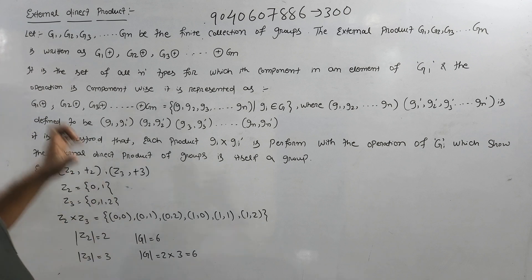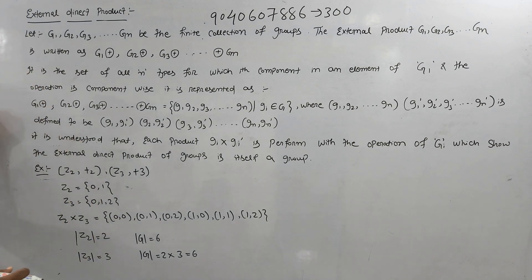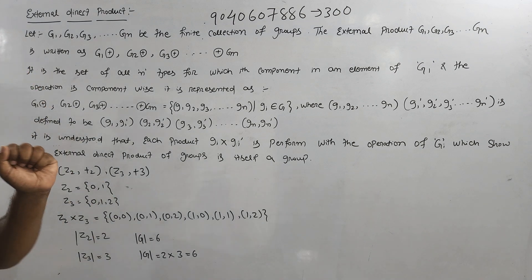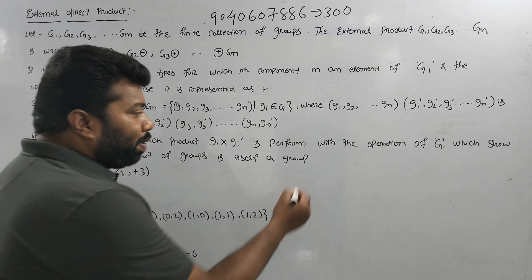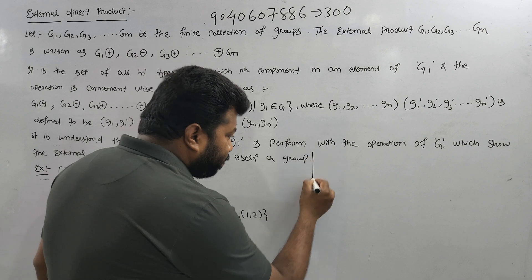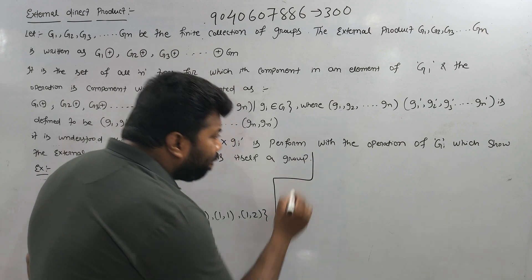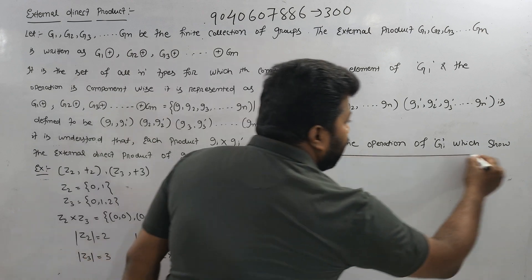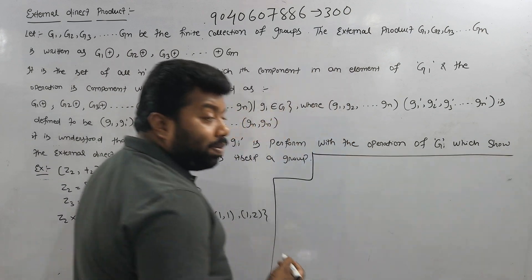So you will be able to find the external direct product. If you have the full project of cross product, you will be able to find the way.